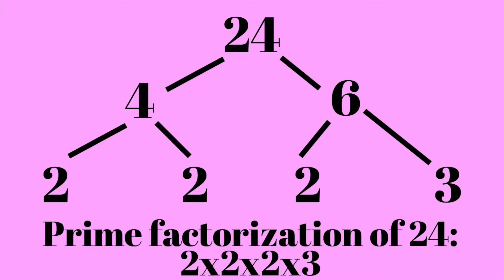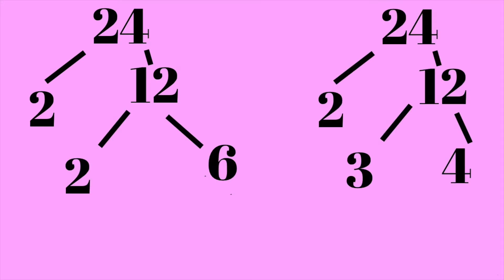You might be wondering about the 4 and the 6 that we started with. The factors you start with don't actually matter because the end result is only prime numbers. Don't try to add 1 in there — that just doesn't work. Because 24 has a ton of different factors, 24 can also be the product of 2 and 12. If we put 2 and 12 in our tree, we can see that 2 is a prime number but 12 is not, and there are two ways you can break down 12.